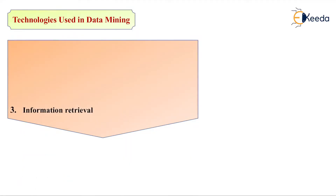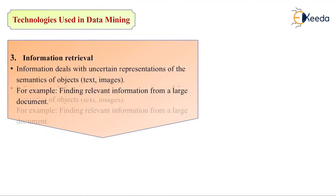The next technology is information retrieval. This deals with the uncertain representation of semantic objects like text or images — for example, a cat image, dog image, or elephant image. So we have to predict whether that image is an elephant image or a cat image. That also we can do with the help of data mining.